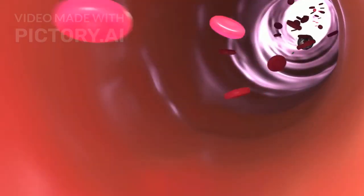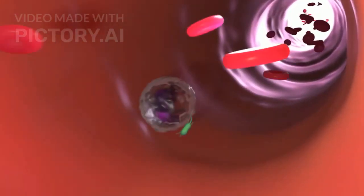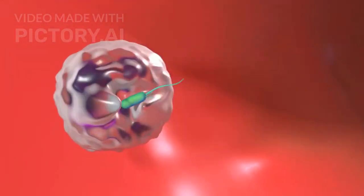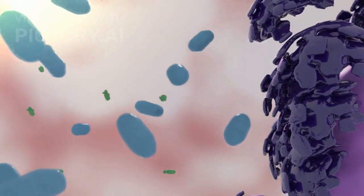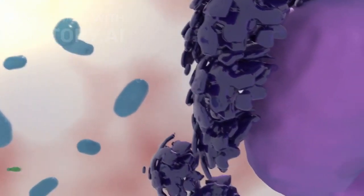Neutrophils are the most abundant WBCs, forming about 60-70% of total leukocytes. They are the first line of defense against bacterial infections and destroy pathogens through phagocytosis.